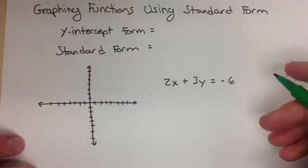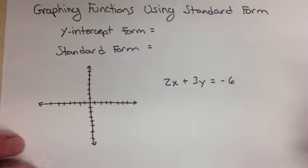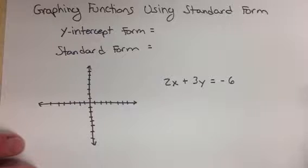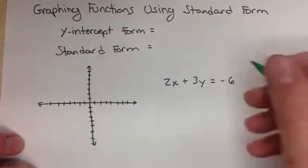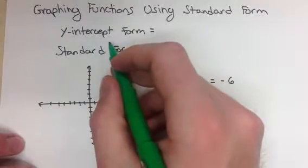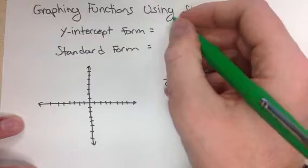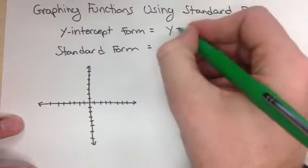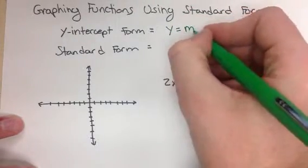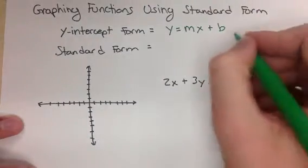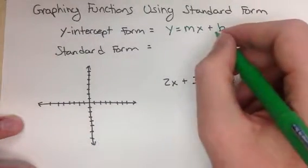So to start graphing in standard form, first let's remind ourselves what form we usually see our equations in and what we saw in our equations last year. So last year we really worked a lot with y-intercept form, and that looked like this: you had y equals some number mx plus some number b. So that would have been our y-intercept form.